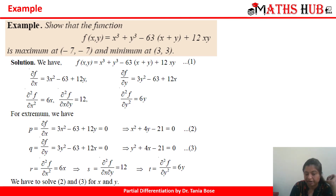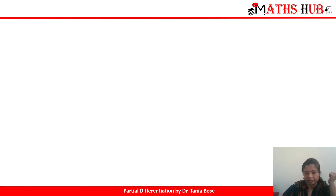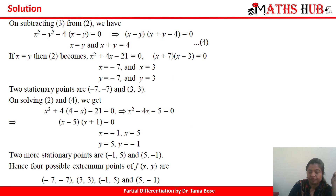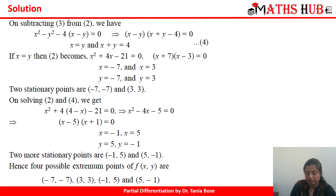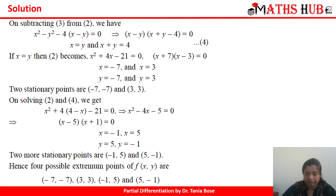Solving the two equations, we get x = y and x + y = 4, which gives x = -7 and x = 3. Since x = y, the coordinates are the same, yielding two stationary points: (-7, -7) and (3, 3). Further solving also gives y = 5 with x = -1, and x = 5 with y = -1. So we get four stationary points in total: (-7, -7), (3, 3), (-1, 5), and (5, -1).